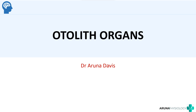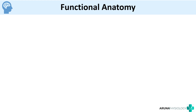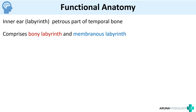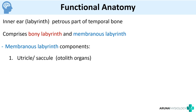In this video we are going to see about yet another part of the vestibular apparatus, which is the otolith organs. Otolith organs can be asked as a short note, so we will see how to approach this question. In the introduction you can write about the basic information about the vestibular apparatus. It is present in the petrous part of the temporal bone and comprises the bony labyrinth and membranous labyrinth. The membranous labyrinth consists of the utricle and saccule, which are the otolith organs, as well as the semicircular canals.